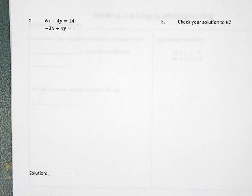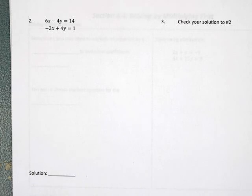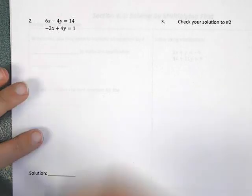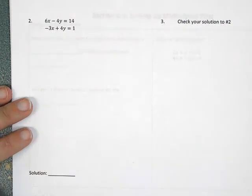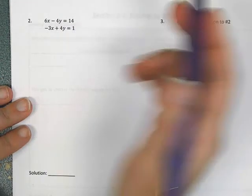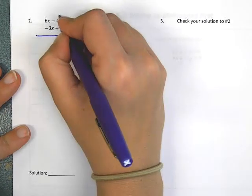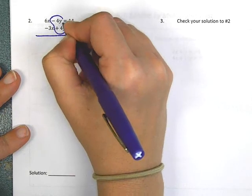Let's try a few more examples. In problem number 2, the first thing I want to check is that all of the values are lined up — the x is on top of the x, the y is on top of the y, the equals is on top of the equals, and the number is on top of the number. We're good to go. Now I'm going to look at the values. The 6 and the negative 3 will not cancel, but the negative 4 and the positive 4 will cancel.